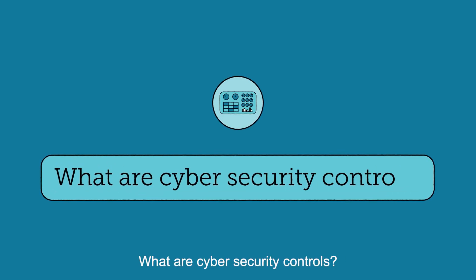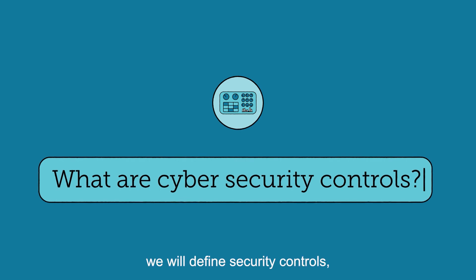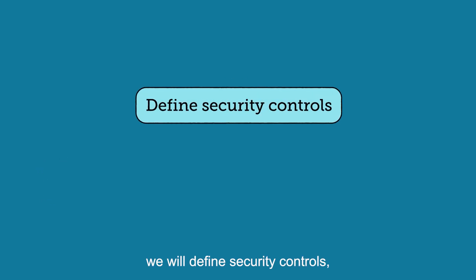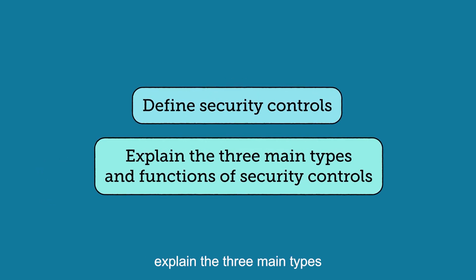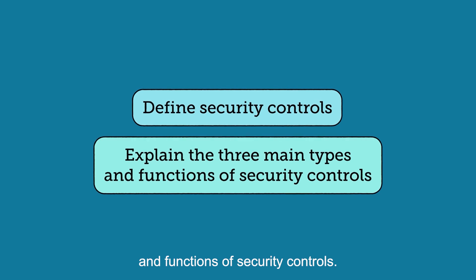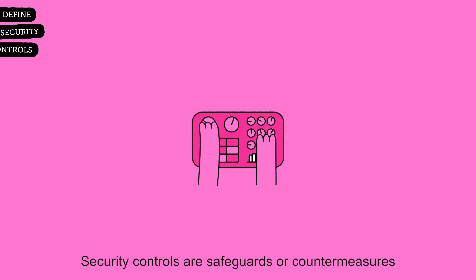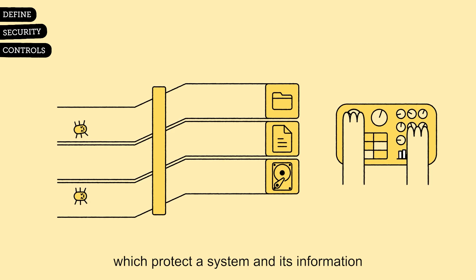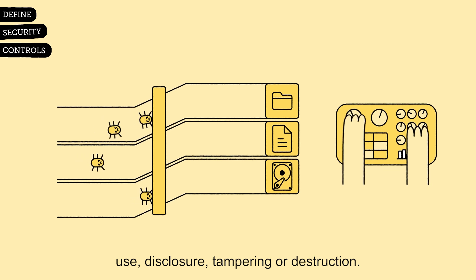What are cybersecurity controls? In this video we will define security controls and explain the three main types and functions of security controls. Security controls are safeguards or countermeasures which protect a system and its information from unauthorized access, use, disclosure, tampering or destruction.